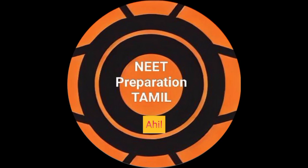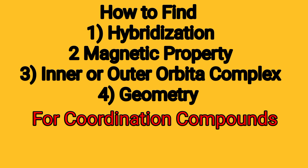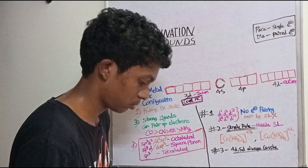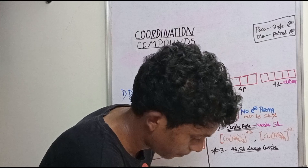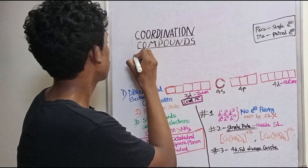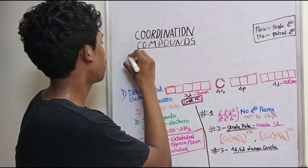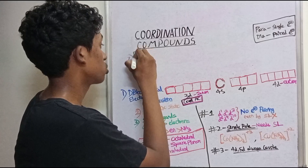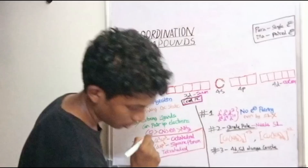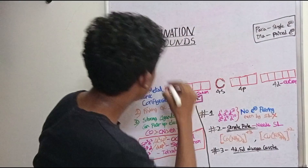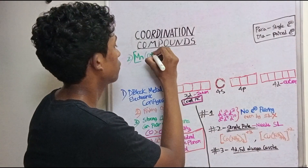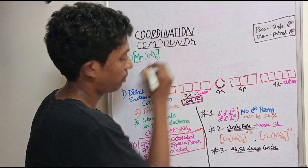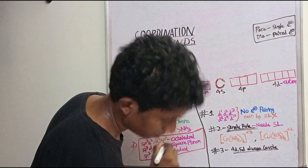Welcome to NEET Preparation Tamil. In this video, we will talk about 4 examples. The next example is the Manganese 2 complex. Manganese with cyanide CN₆, with a charge of minus 4.